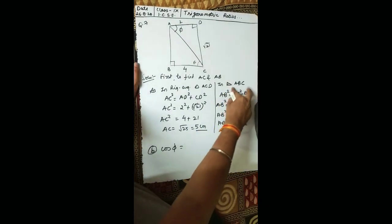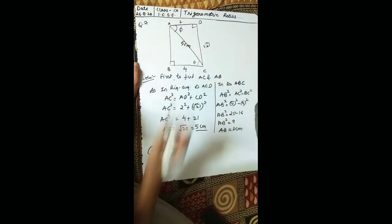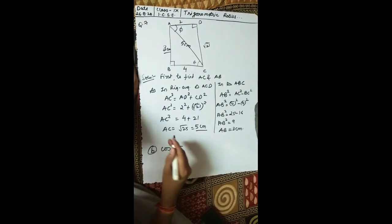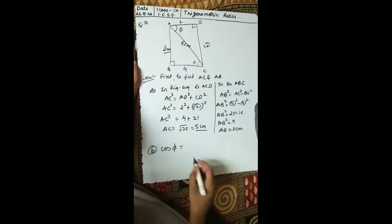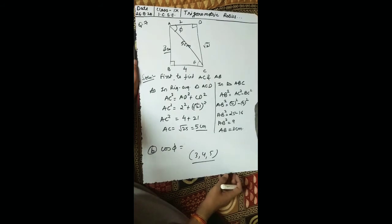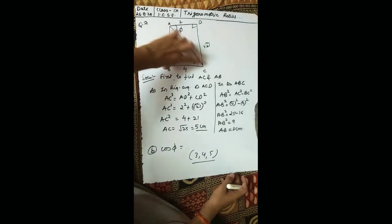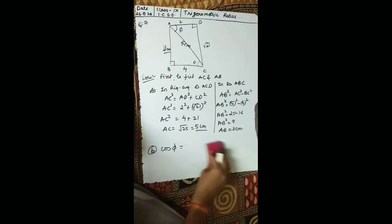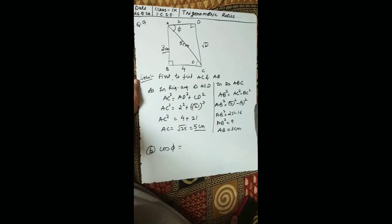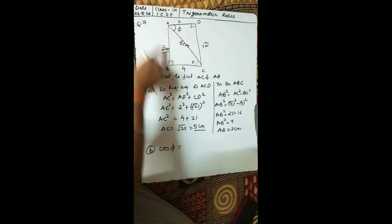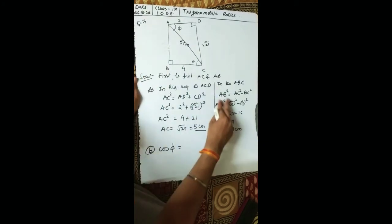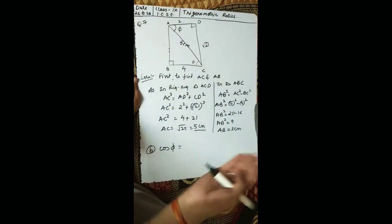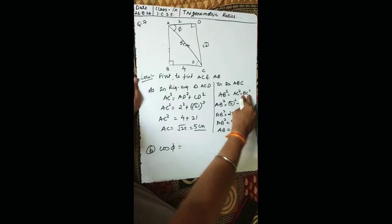Now in right triangle ABC, AC is 5 cm. Recall the Pythagorean triplet 3-4-5: if perpendicular is 3 and base is 4, the hypotenuse is always 5. So we can expect AB to be 3. Using PGT: perpendicular squared equals hypotenuse squared minus base squared.